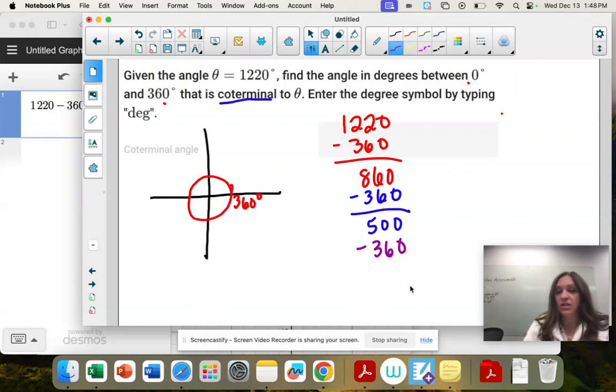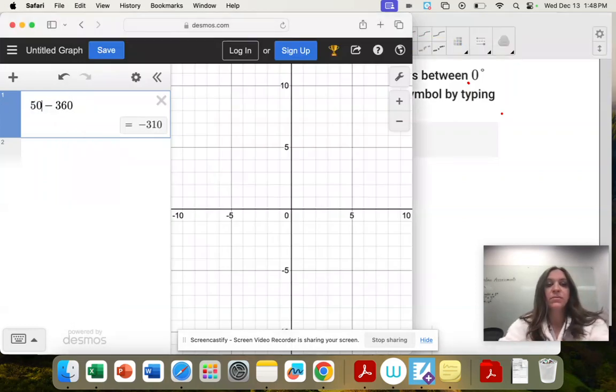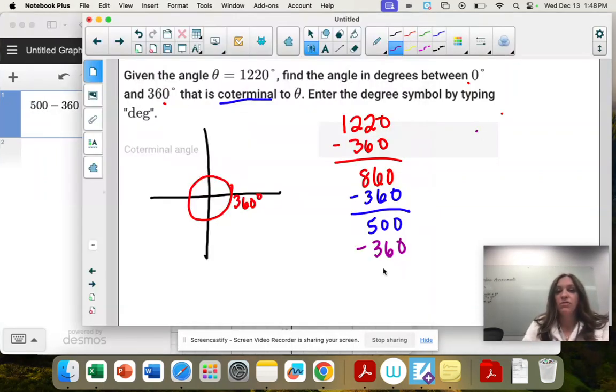I'm going to subtract 360, and that's 140. And that is my angle that's between zero and 360.